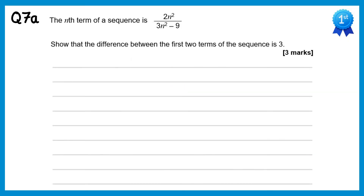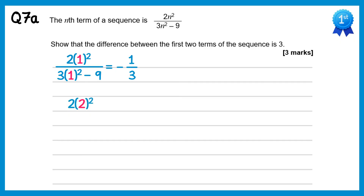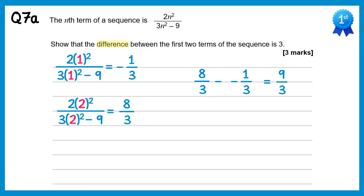In this question we're asked to show the difference between the first two terms is 3, so we'll work out the first two terms. Substituting n equals 1: 2 lots of 1 squared over 3 lots of 1 squared minus 9 gives 2 over negative 6, which is negative 1 third. For the second term: 2 lots of 2 squared over 3 lots of 2 squared minus 9 gives 8 over 3. The difference is 8 over 3 minus negative 1 third, which equals 8 over 3 plus 1 third, giving 9 thirds, which is 3.